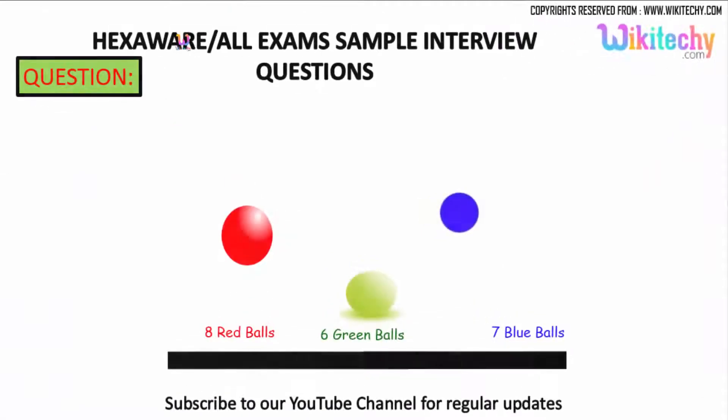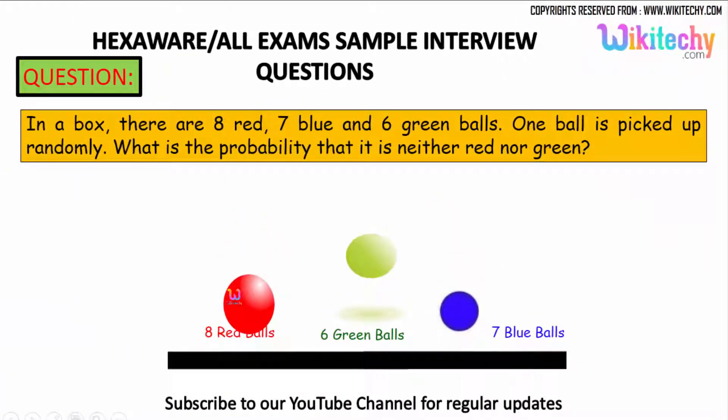Here is the question. You got a box with 8 red balls, 7 blue balls, and 6 green balls. From this particular box, one ball is picked randomly. What is the probability that it is neither red nor green?